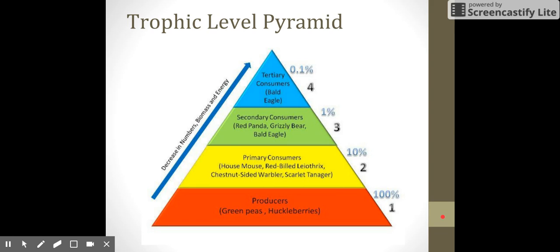In case that wasn't going to work for you either, you have this pyramid here. And I really like this pyramid because it illustrates the 10% rule on the right-hand side. It illustrates biomass and the numbers on the left-hand side because there's a decrease in the amount of organisms that exist as you move up the chain. The amount of organisms is the biomass. And it also gives examples of different primary, secondary, tertiary consumers as well as producers in a food web that you could actually draw here using this pyramid. If you look here, you've got your primary consumers being the house mouse, the red-bellied letharix, the red-chested-sided warbler, the scarlet tanager eating the green peas and the huckleberries. Those primary consumers are going to be eaten by the red panda, the grizzly bear, the bald eagles. And then the bald eagles are also tertiary consumers because bald eagles can also consume things in the secondary consumer route as well. So please make sure that you are looking at this pyramid and you understand both the left and the right-hand side with the percentages and the biomass.